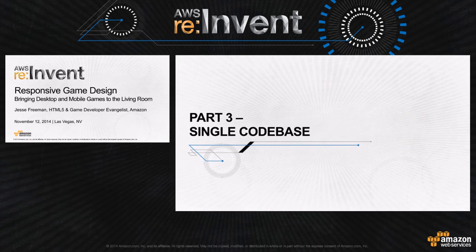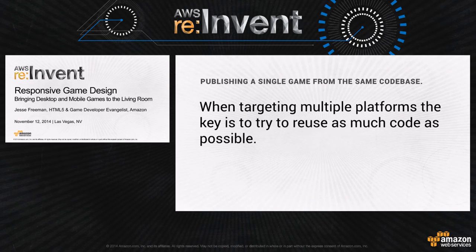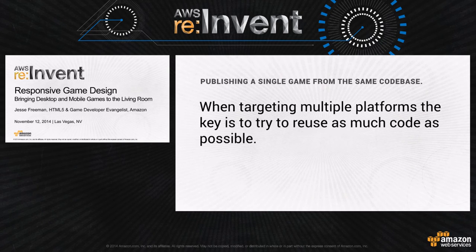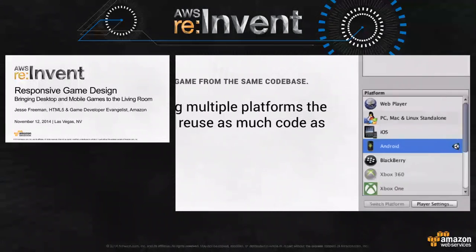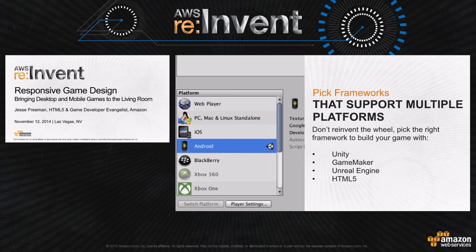Part three: a single code base. When publishing a game from the same code base, reuse as much code as possible. Back in the day you had to rebuild games from platform to platform, but now there are great frameworks to manage this. Don't reinvent the wheel — pick something that targets all platforms so you can focus more time on building the game and less on supporting different platforms. Great frameworks to consider include Unity, GameMaker, Unreal Engine, and HTML5.